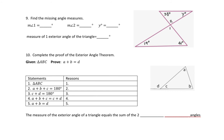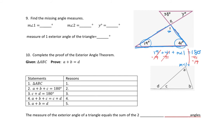Find the missing angle measures. We have two triangles here. I'm going to start with the triangle on the bottom because I have more information about it — one angle is 19, the other is 41. So 19 plus 41 plus angle 1 needs to add up to 180 degrees. Using a calculator: 180 minus 41 minus 19 equals 120. So angle 1 is 120 degrees.